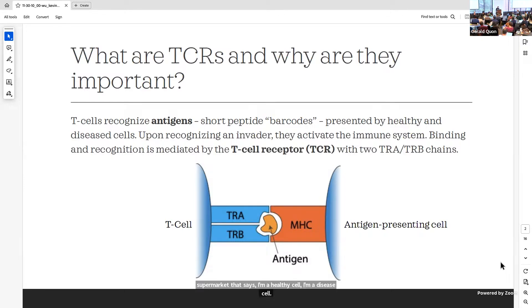When these T-cells come along and recognize an antigen, they may decide this is a bad cell, this is a good cell, and then recruit the immune system accordingly. This binding and recognition effect is mediated by this T-cell receptor, this dimeric peptide chain with a TRA chain and a TRB chain, which are more or less separate, and these two chains come along and look at this antigen and make that decision.